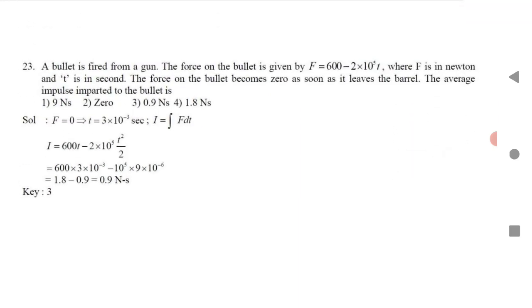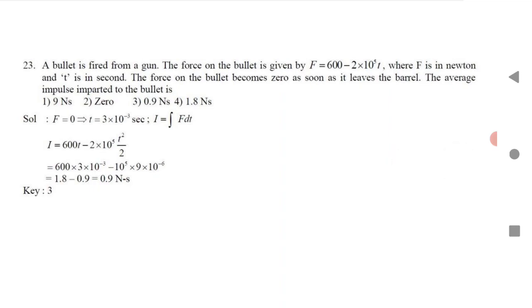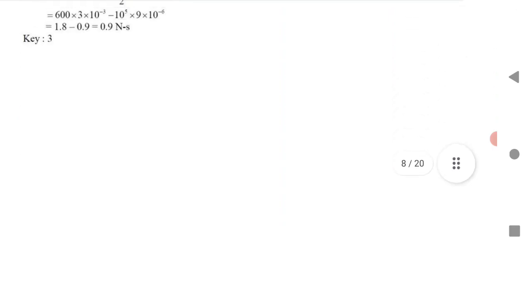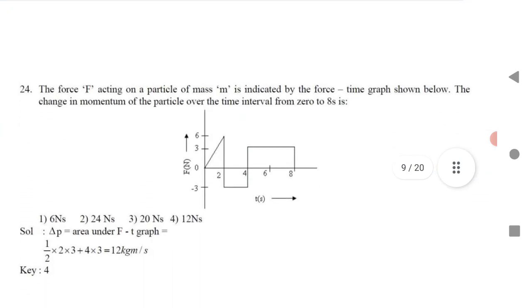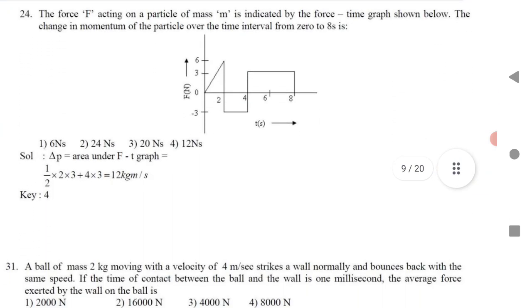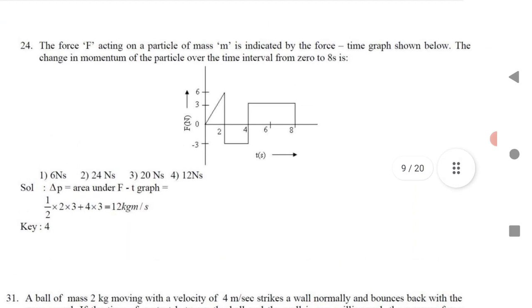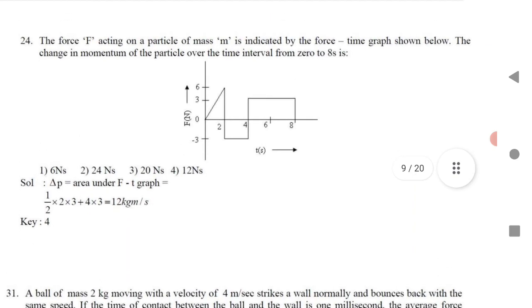Question 15 (very important): A bullet is fired from a gun. The force on the bullet is given as F = f(t) in Newtons, where t is in seconds. The force becomes zero as soon as the bullet leaves the barrel. To find the average impulse, use impulse = ∫F dt. Integrate the given force function to get the answer.